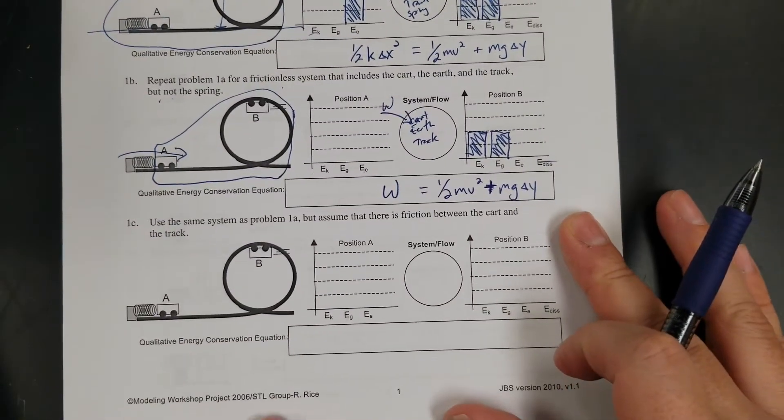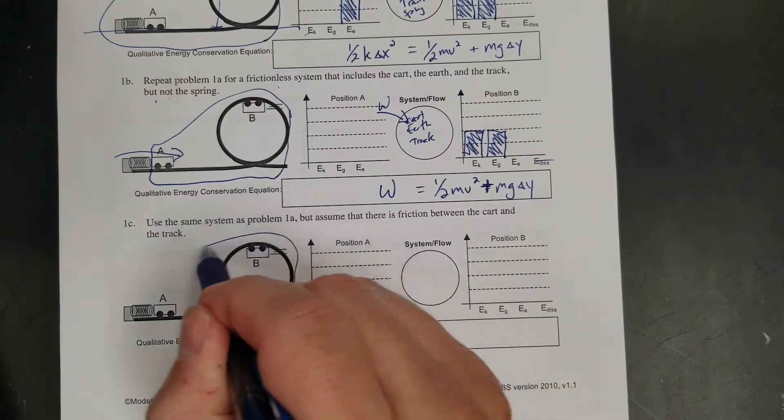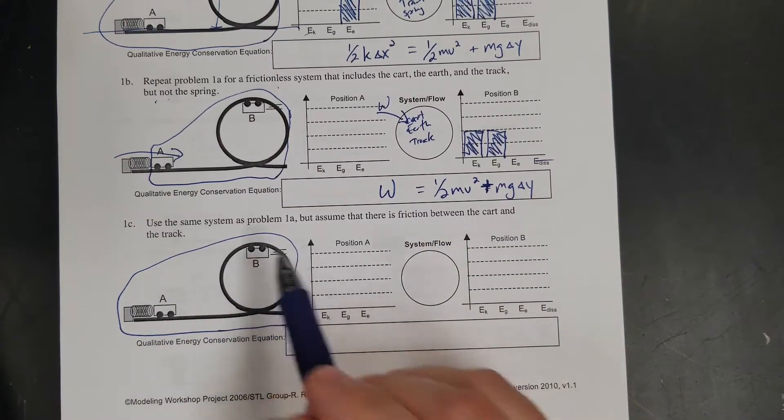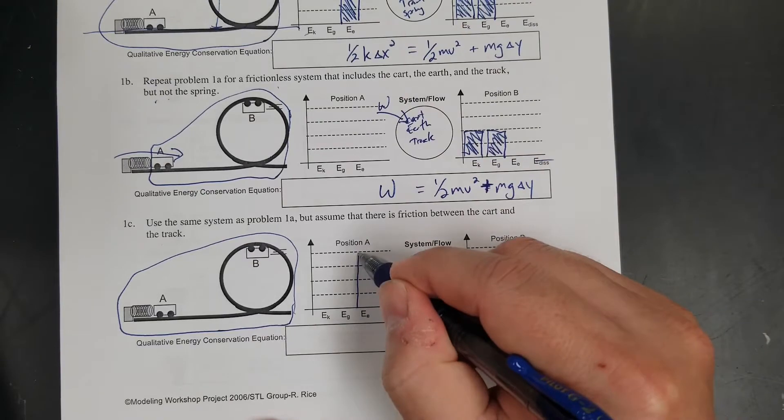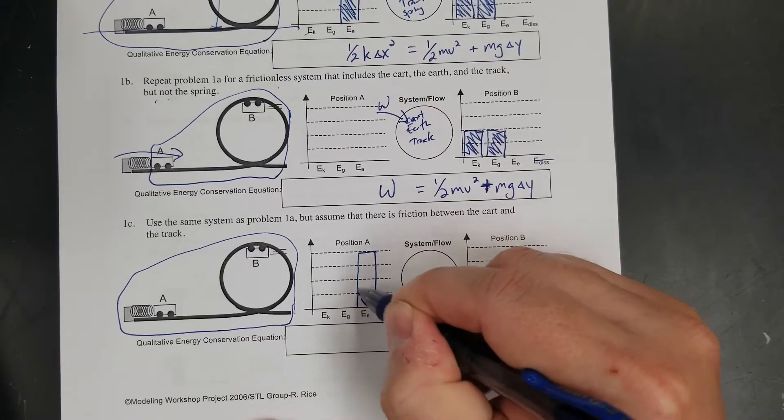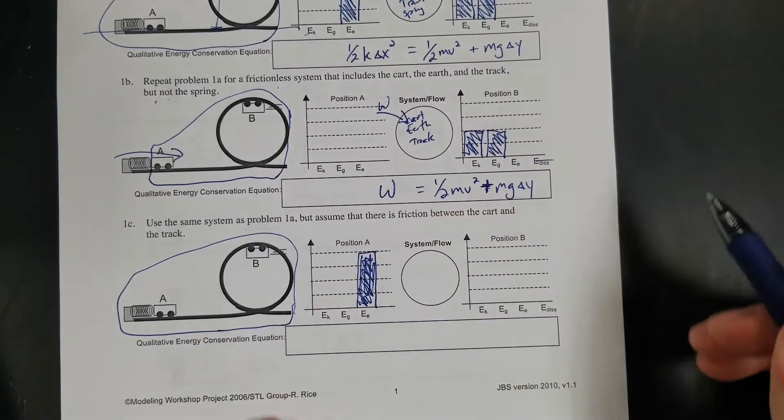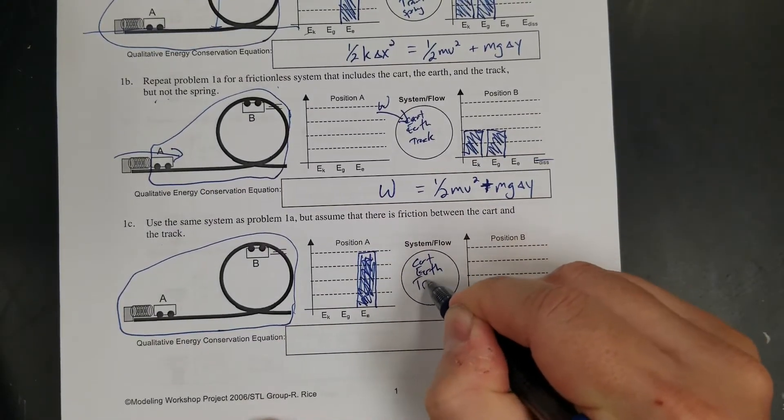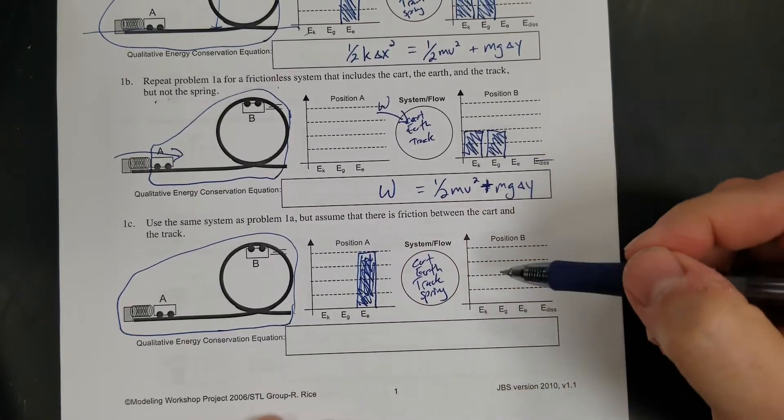Same system as problem one. That means everything's in the system. Now there's friction between the cart and the track. I know I'm going to do the same thing because it says it's the same as one. I'll start with four bars - I'm just making up four bars. It doesn't matter what you start with. Cart, earth, track, spring.